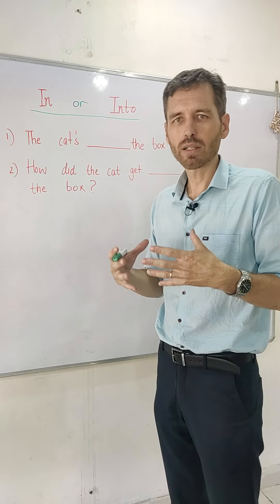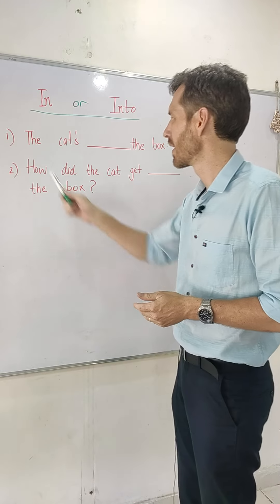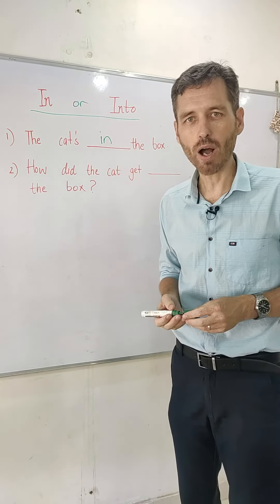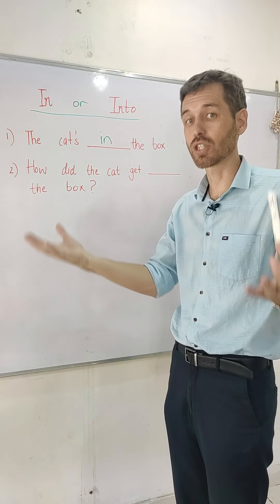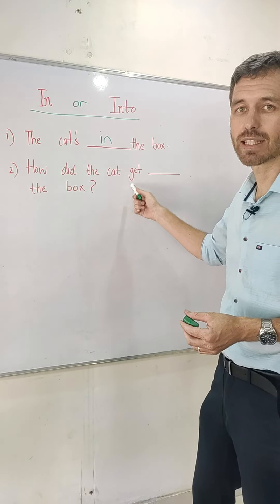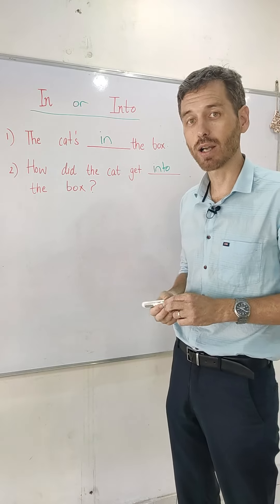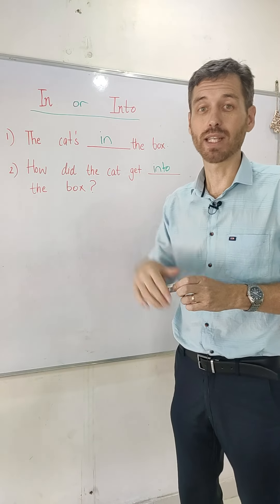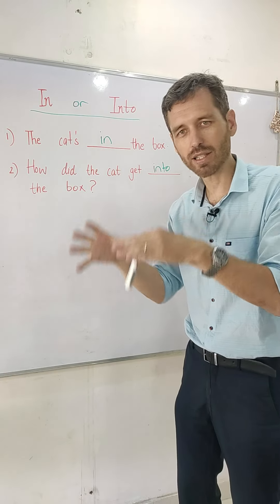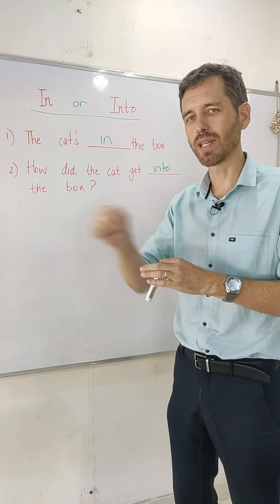We use 'in' when something is stationary, when something is not moving. The cat's in the box — it's there. But how did the cat get into the box? There's movement when something is changing. The cat's in the box — it's stationary. How did the cat get into the box? There's movement.